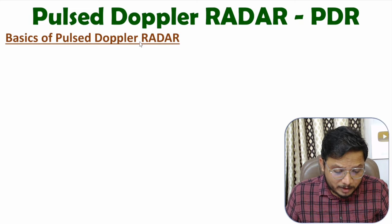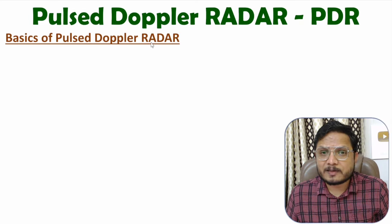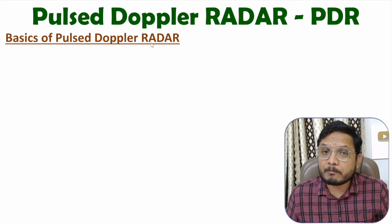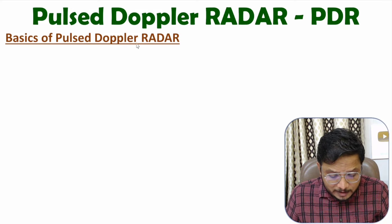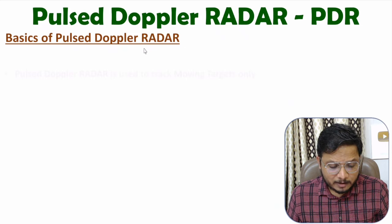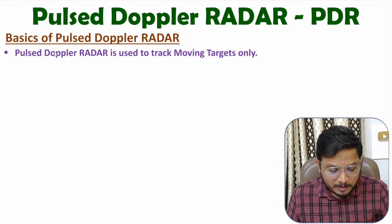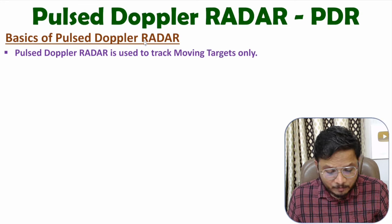First of all, you need to understand where we should use this system. This system is used to identify moving objects only. We don't use this system for stationary targets. So PDR means Pulsed Doppler Radar — we use it to track moving targets only. We don't use this system for stationary objects.